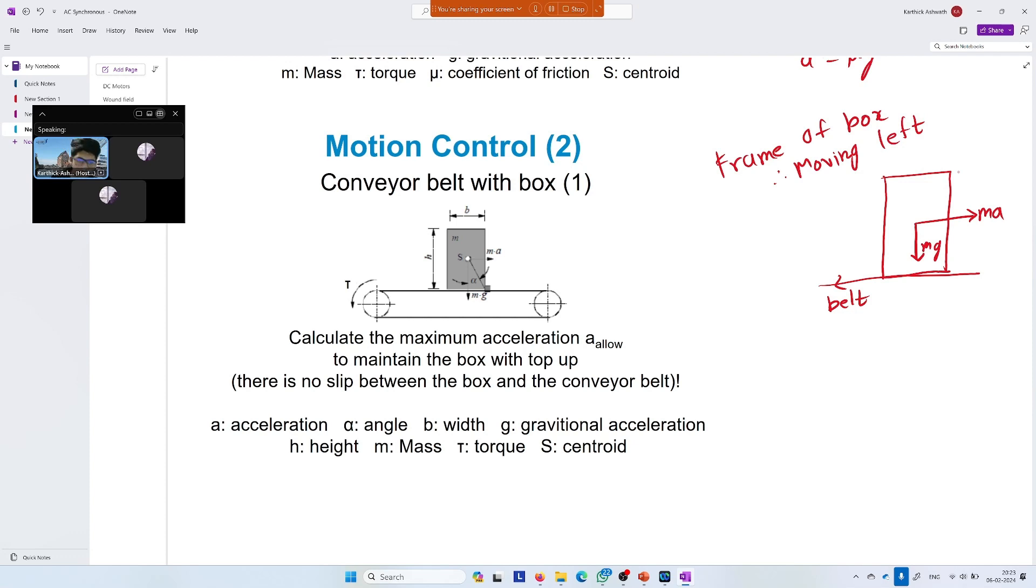Now let us do vector summation of Mg and Ma, then I get a net vector. Let's say this is F_total. If this F_total is outside the base of the box, when you draw it correctly to scale, if this F_total is outside the base of the box, then it means there is a net torque about the center of mass, and it will topple.